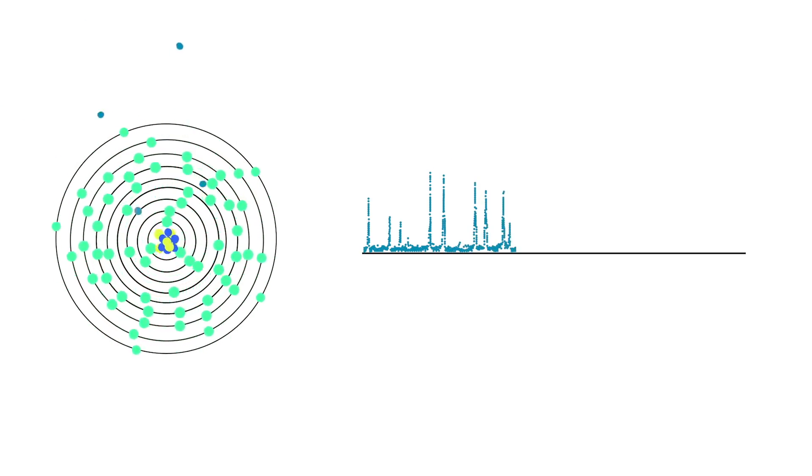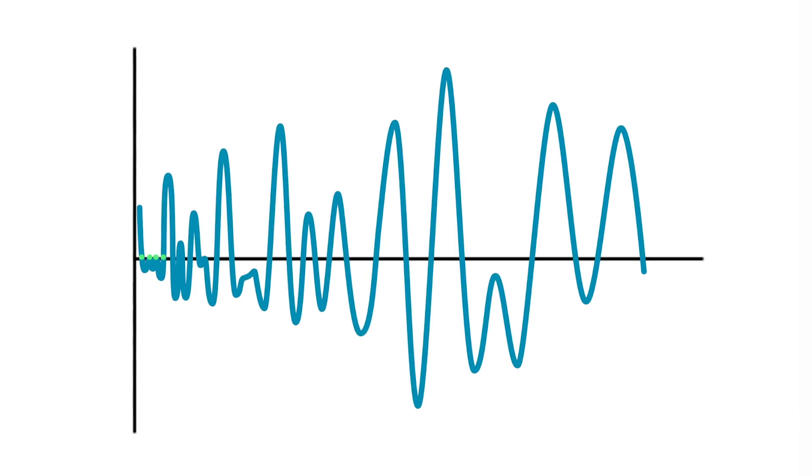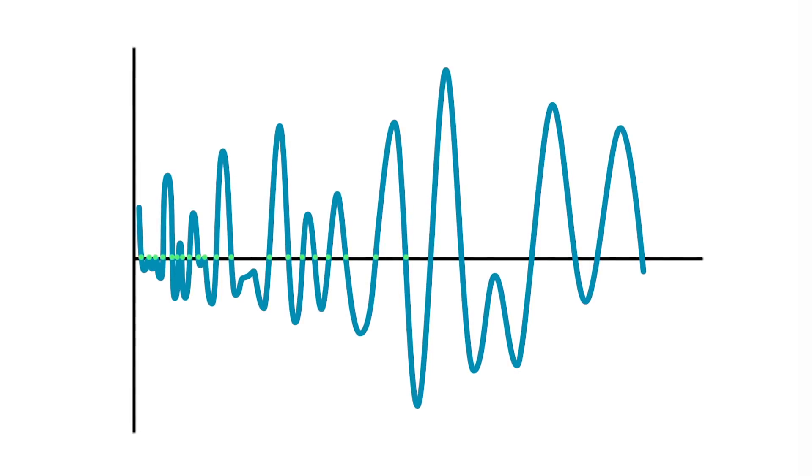Two decades later, the pattern was seen in gaps between consecutive numbers called zeros of the Riemann zeta function. These zeros are thought to control how prime numbers are distributed.